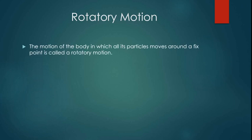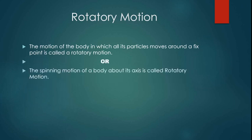First I'm gonna be explaining rotary motion. The motion of a body in which all its particles move around a fixed point is called a rotary motion, or the motion of a body about its axis is also called rotary motion. For example, motion of a top, motion of a ceiling fan, or motion of a steering wheel.